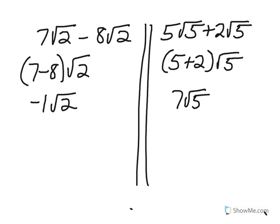5√5 + 2√5 are also like radicals. We add those by adding the coefficients 5 and 2, which results in 7, and then we write our √5, giving us 7√5. Please pause the video and copy these notes.